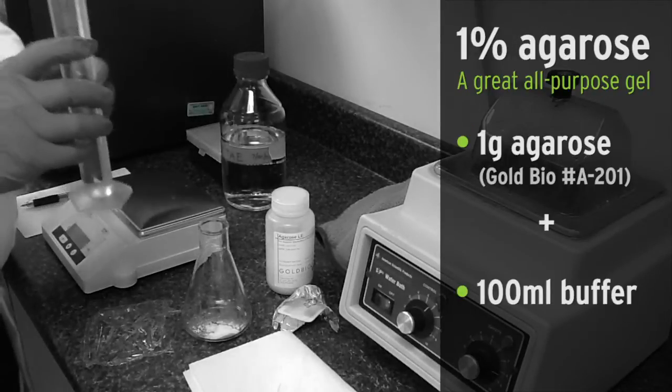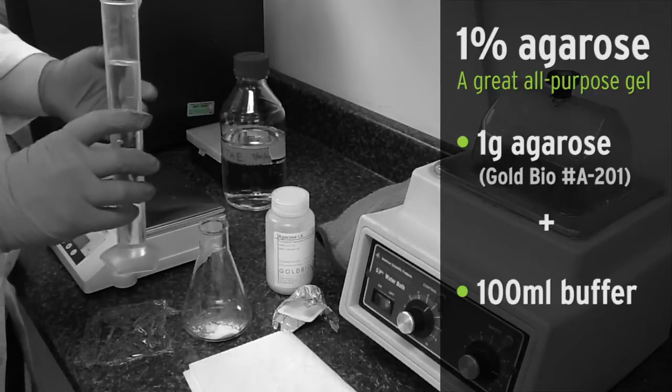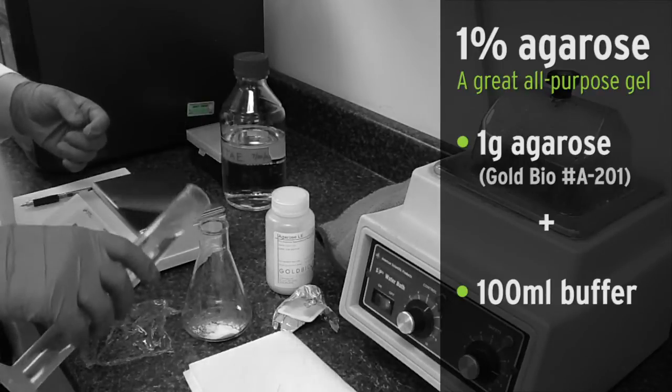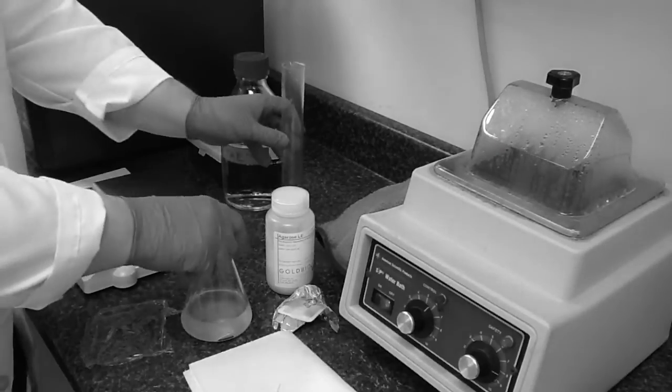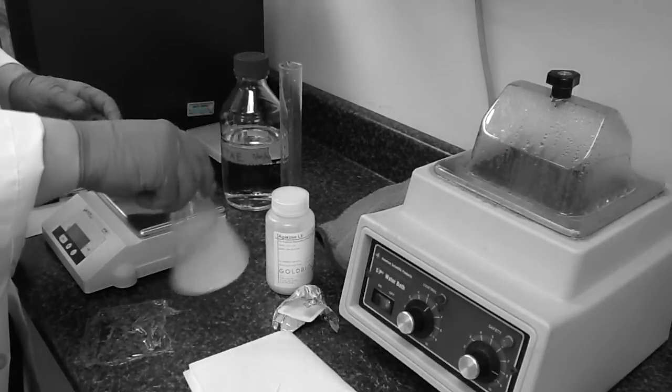Next, you'll measure out 100 mils of TAE or TBE buffer and add it to your flask. Swirl it a few times to distribute the agarose.